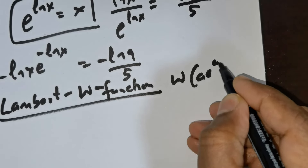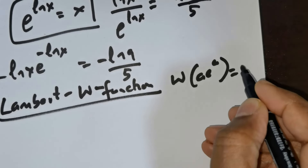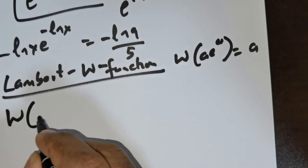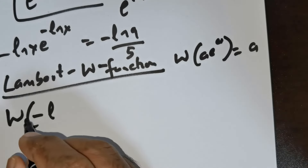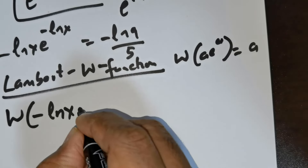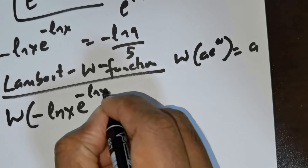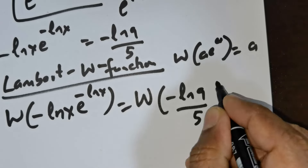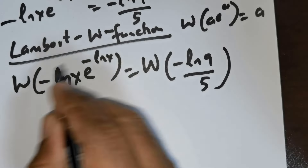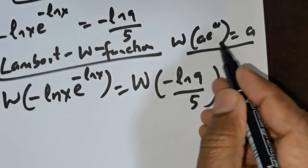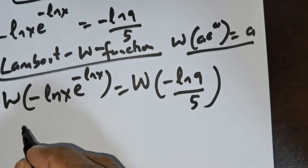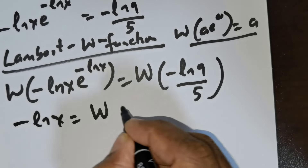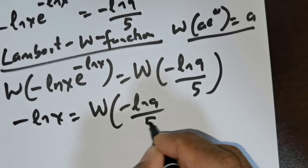According to the definition of the Lambert W function: W of a times e raised to the power of a will give me a. So I take the Lambert W function of negative ln x times e raised to the power of negative ln x, which is equal to W of negative ln 9 divided by 5. This has that formula, so this is going to be: negative ln x is equal to W of negative ln 9 divided by 5.